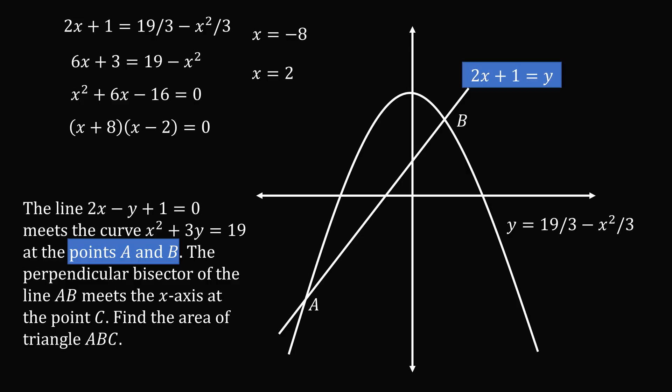Now we know that y equals 2x plus 1, so we can solve for y in each of these cases. So if x equals negative 8, y will equal negative 15, and if x equals 2, y equals 5. So we have the points negative 8 comma negative 15 and 2 comma 5.